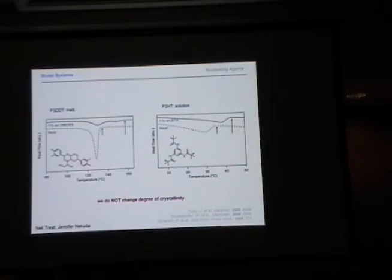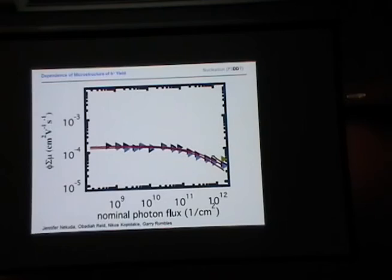And the same goes for solution. When we take P3HT in solvent, cooled down, it usually crystallizes around room temperature. Once we add the nucleation agent, it crystallizes earlier — full indication that we got smaller crystals.